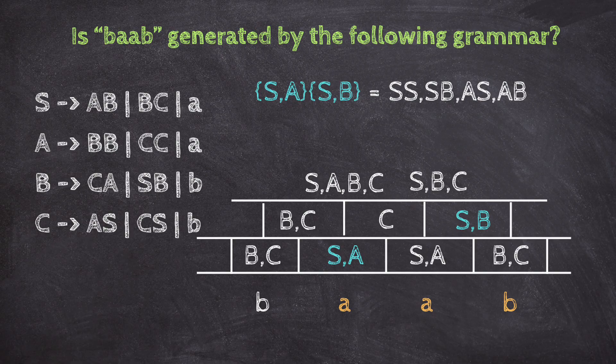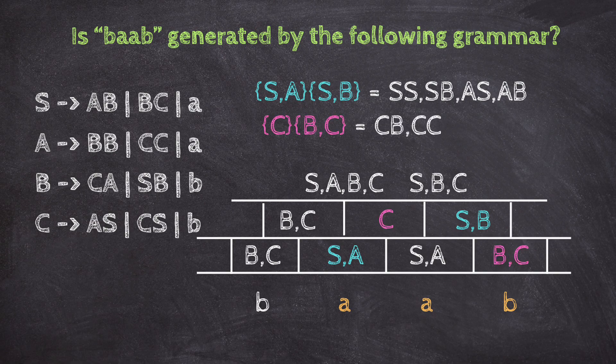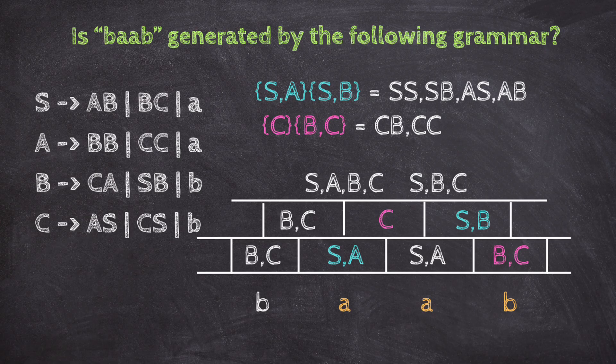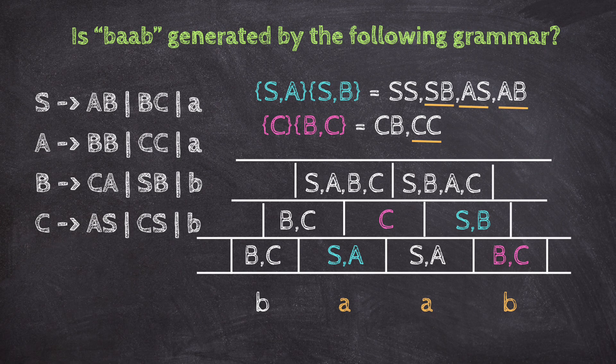Now split as AA and B. C from AA, and B, C from B. Pairs are CB and CC. A goes to double C, so A goes above. So for AAB, we have S, A, B, C.